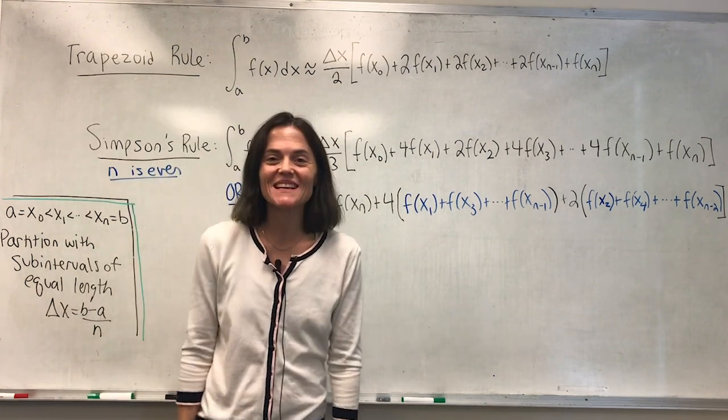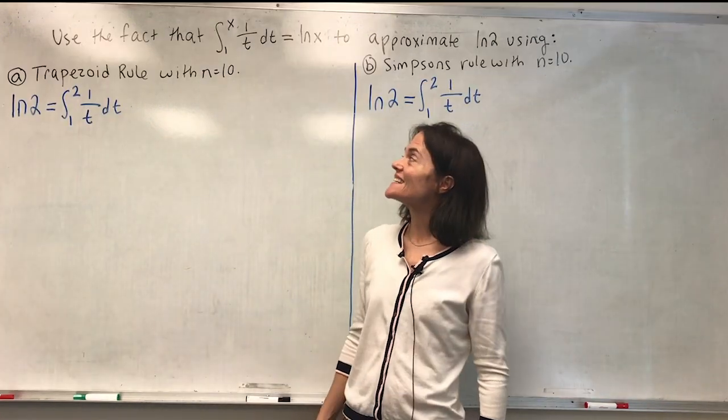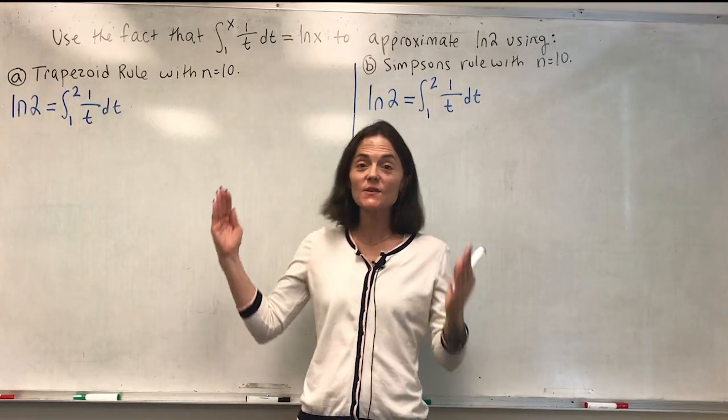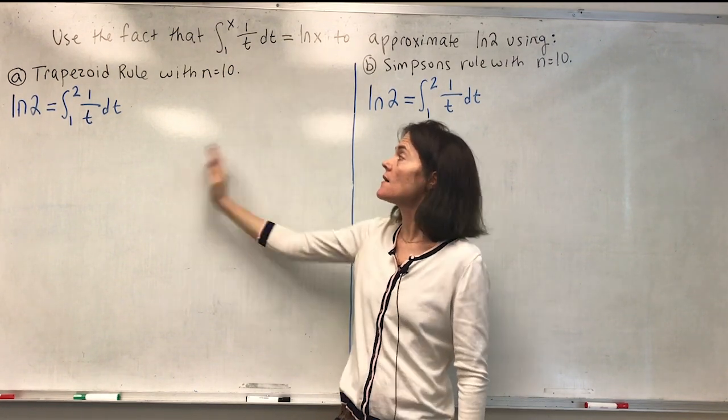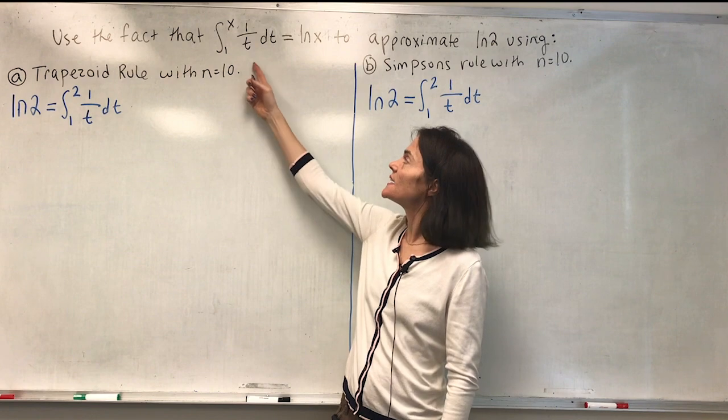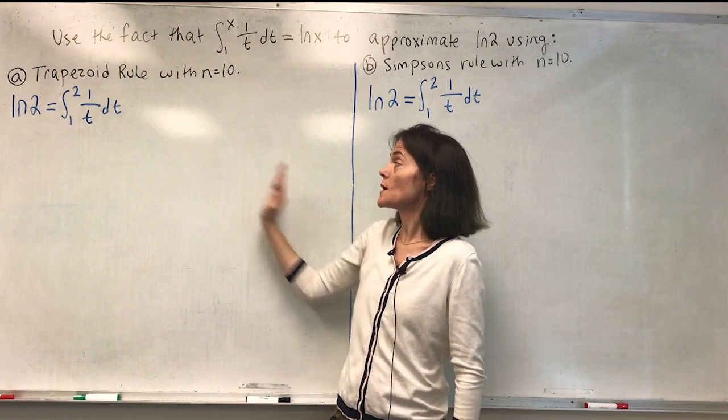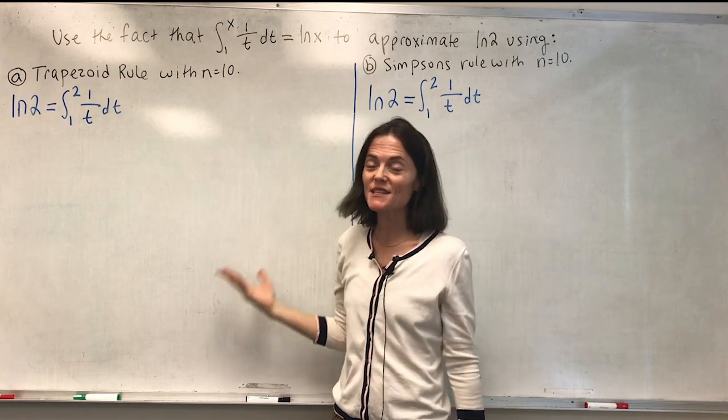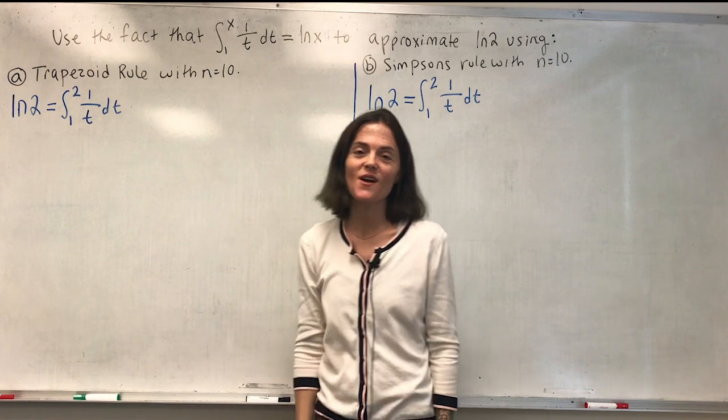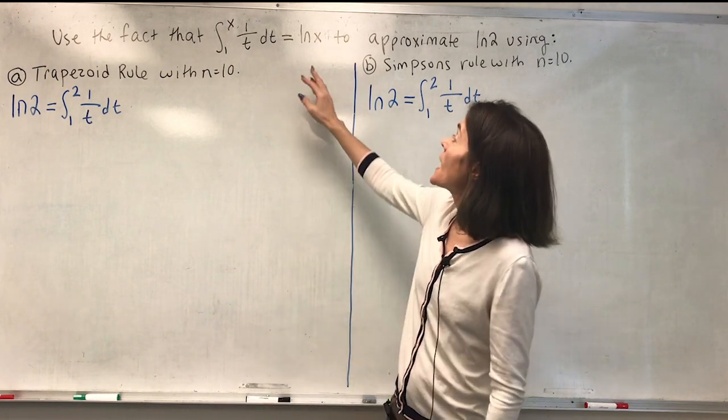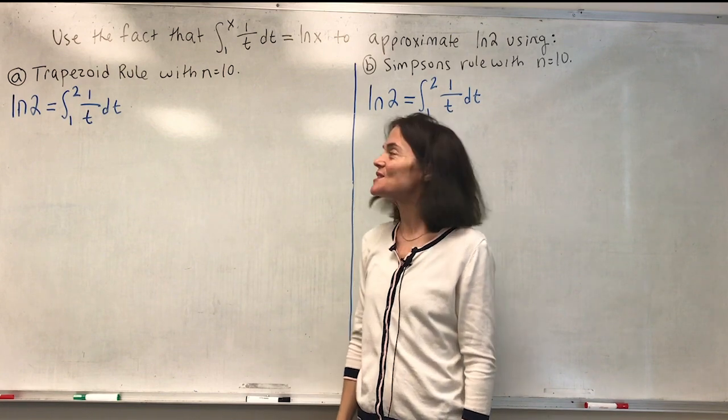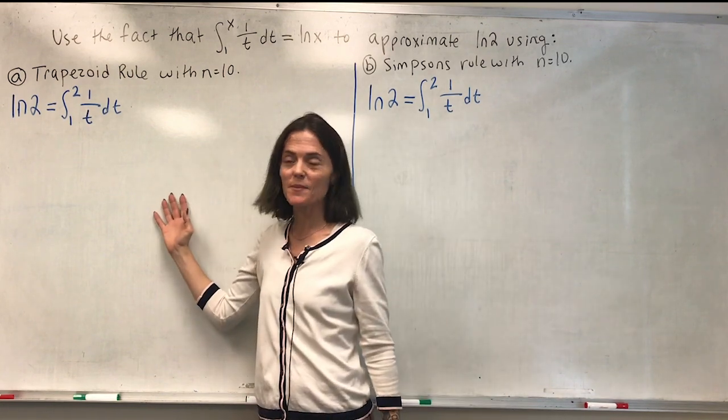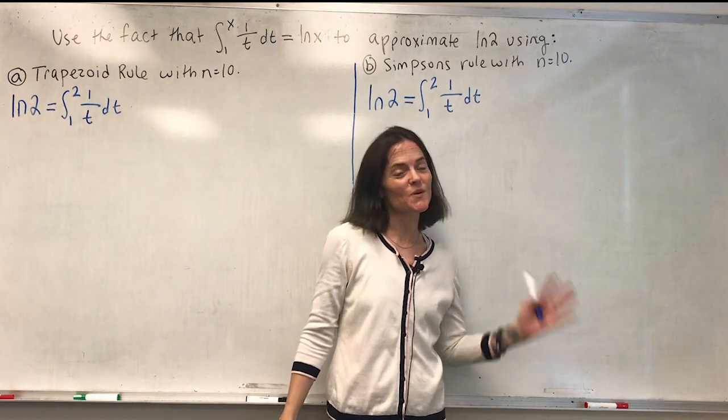So now let's do an example. What I'd like to do is use the fact that the natural log of x is the area under the curve of 1 over t between 1 and x. You could take that as a definition of the natural log if you wanted to, but we will use this to approximate the natural log of 2 both using the trapezoid rule and Simpson's rule.